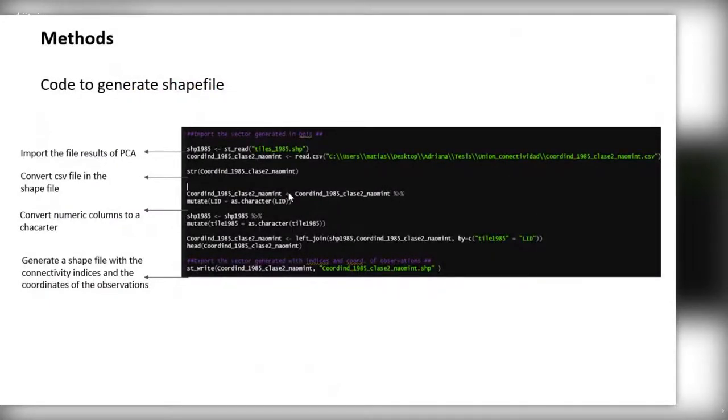When we want to see connectivity spread spatially, we generate a shapefile to be able to make a map. First import the file result of PCA, and later convert CSV file into the shapefile. Finally, generate a shapefile with the connectivity index and the coordinates of the observations.